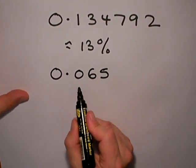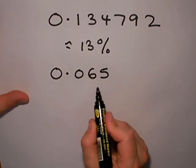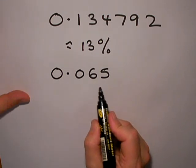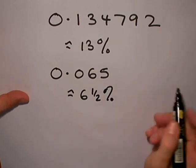In this case we have 0.065. The 5 afterwards suggests that it's 6.5%, so this would be equal to 6.5%.